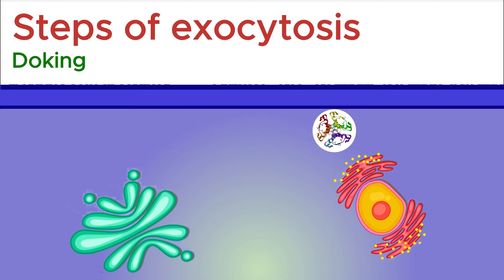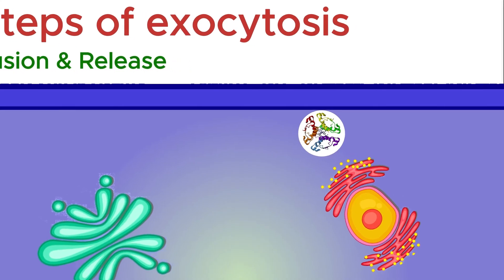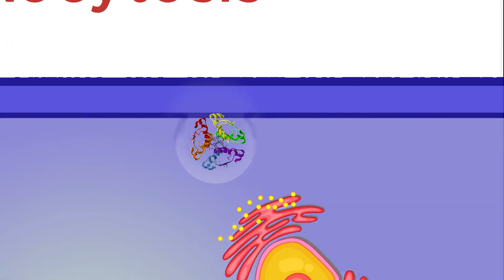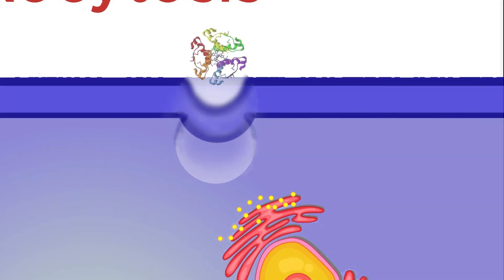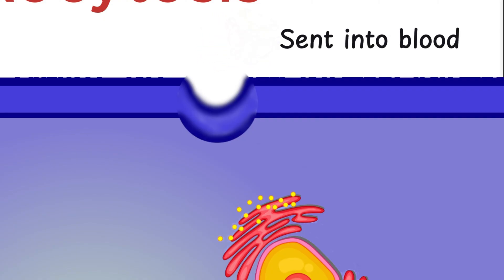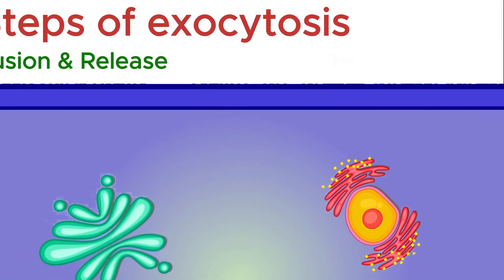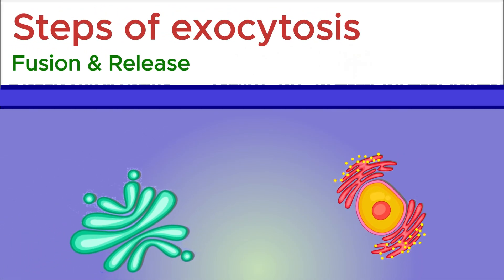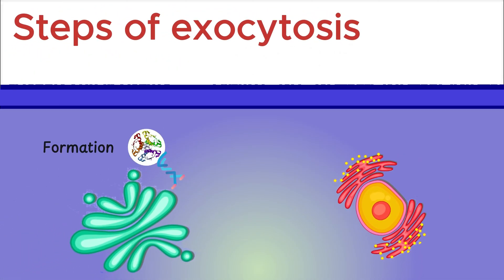After docking, the vesicle fuses with the cell membrane — the vesicle's outer layer joins with the membrane's layer. They become one, creating an opening. Through this opening, the material inside the vesicle is released outside the cell. This is how proteins like insulin are sent into the blood. After the release, the vesicle membrane becomes part of the cell membrane. Here you can see all the stages put together.